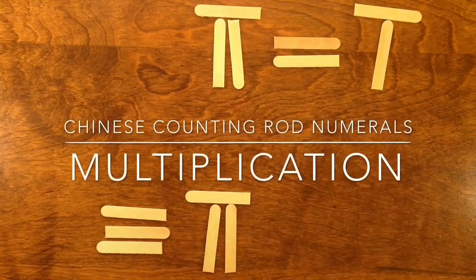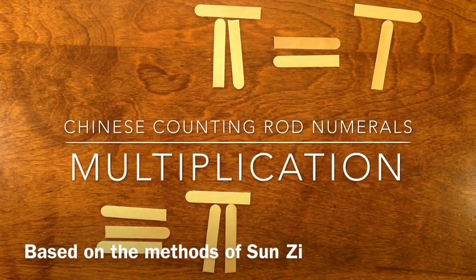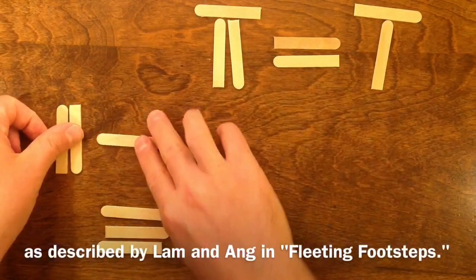So we have 726 times 37. 7 times 3 is 21.